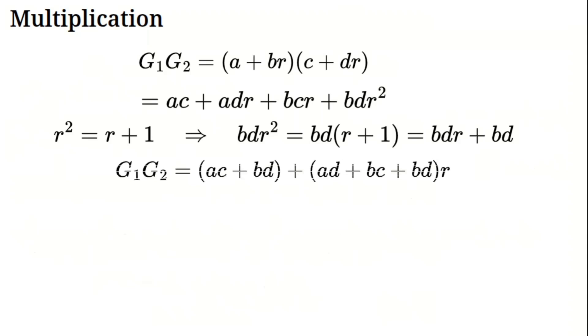Real part is AC plus BD. Golden part ADR plus BCR plus BDR. That's AD plus BC plus BDR. So the product is AC plus BD plus AD plus BC plus BD R. This twists the plane, mixing real and golden parts. Let's find the conjugate next.